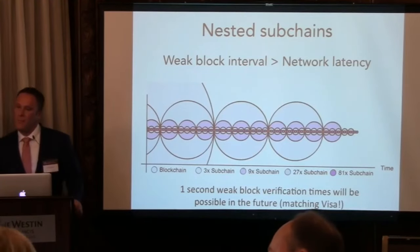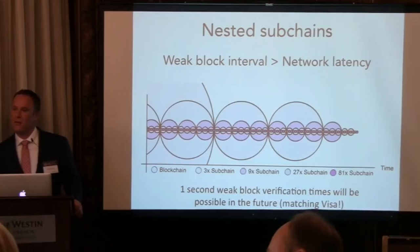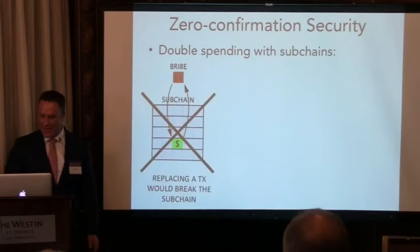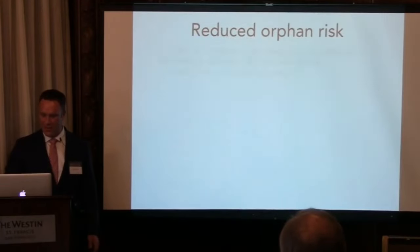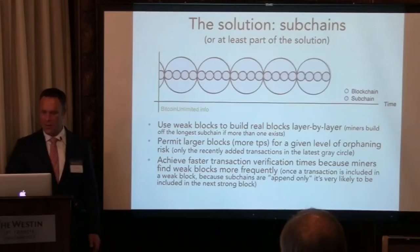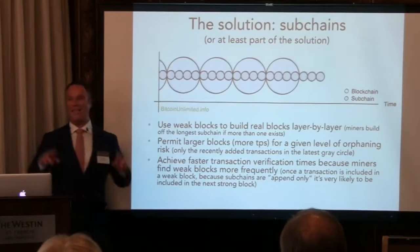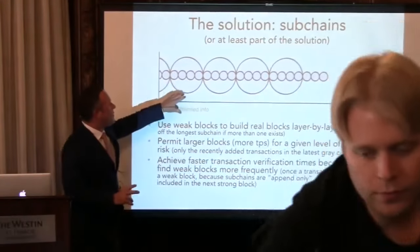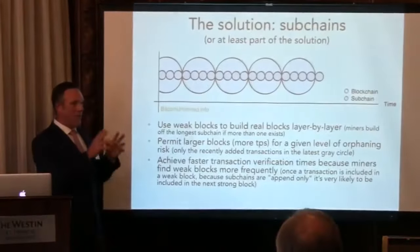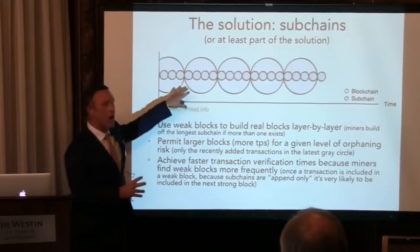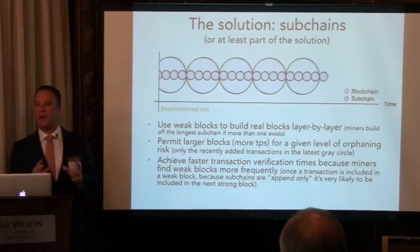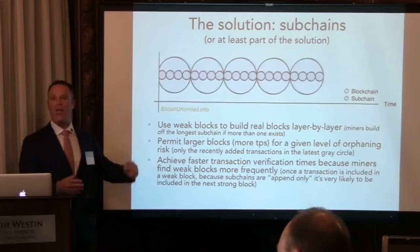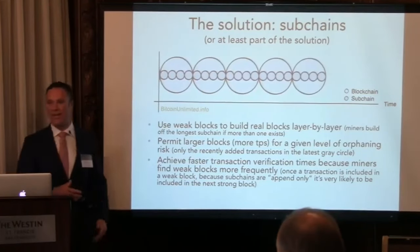Question from Chris: when you say 10 weak blocks per strong block, that's probabilistic — it could end up being 3 or 15. Yes, that's a great point. This is showing idealized subchains with a 4 weak blocks per strong block target. In reality it won't look like that — sometimes there'll be two weak blocks per strong block, sometimes six. If the target is one-quarter the true difficulty, on average you'll have four. It's just hard to show the probabilistic picture.